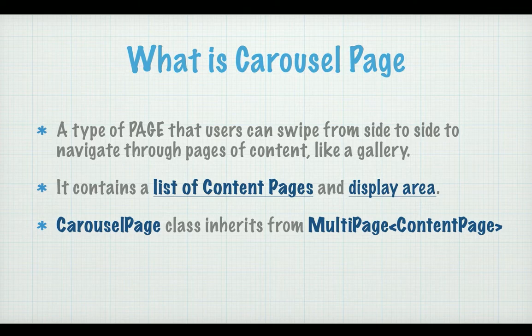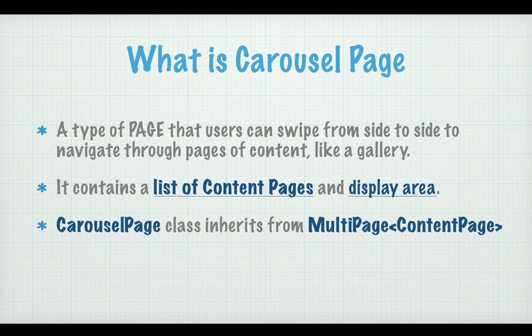It is very similar to the tabbed page which you have seen in previous videos, but in the tabbed page you have a list of tabs below the page so that people can move between pages. In the carousel page, people can swipe left or right to move between pages. It contains a list of pages, and it has to be only content pages — you cannot use master detail page or anything else inside carousel pages. Technically it inherits from the multi-page class where T is the content page.